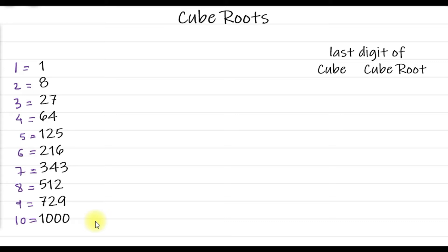If you already remember these, we can jump to the conclusion. If you look at the last digit of the perfect cubes, the last digit everywhere is different. So unlike squares, there is only one possibility here. In squares, depending on the last digit, we used to have two possibilities for the square root. Here all the units digits are different, so there are no two possibilities.